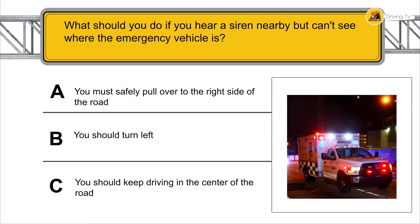What should you do if you hear a siren nearby but can't see where the emergency vehicle is? You must safely pull over to the right side of the road.